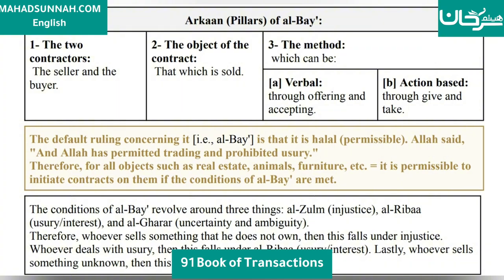The default ruling concerning it is that it is halal (permissible). Allah said: 'And Allah has permitted trading and prohibited usury.' Therefore, for all objects such as real estate, animals, furniture, etc., it is permissible to initiate contracts on them if the conditions of al-bay'ah are met. The conditions of al-bay'ah revolve around three things: al-ghul (injustice), al-riba (usury/interest), and al-gharar (uncertainty and ambiguity).